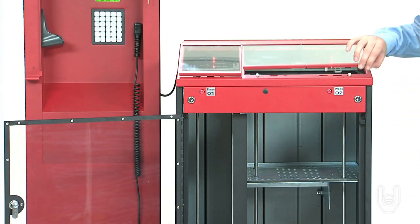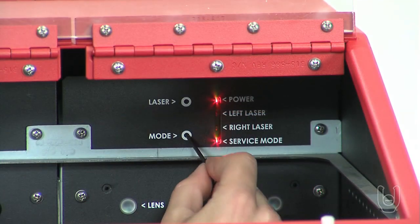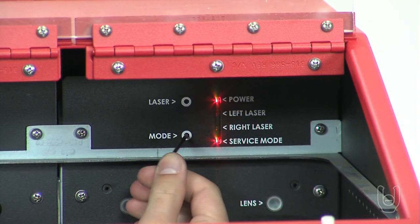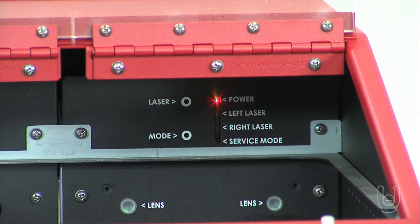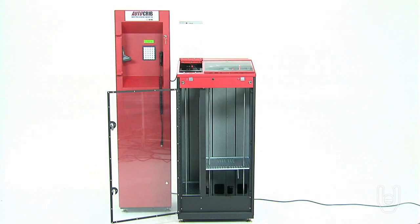Once all the lifters pass the test cycle, you can place the lifter back into run mode by pushing the mode button until the service mode light goes out. The cabinets are now ready to be placed into service, and we can move on to the next segment of this video instruction guide.